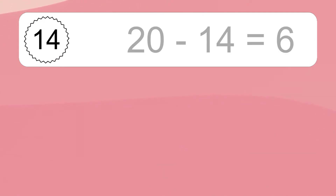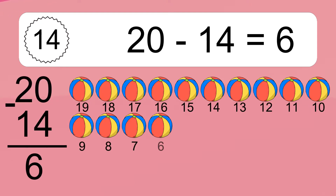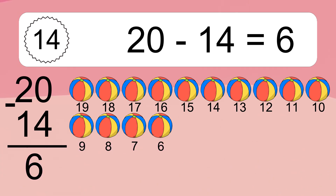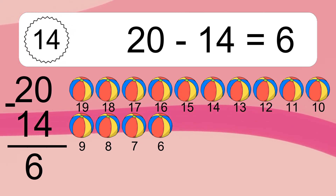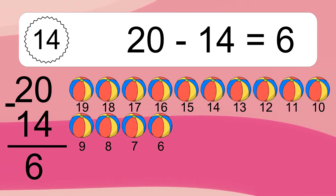20 minus 14 equals what? 20 minus 14 equals 6. Let's count it: 19, 18, 17, 16, 15, 14, 13, 12, 11, 10, 9, 8, 7, 6.